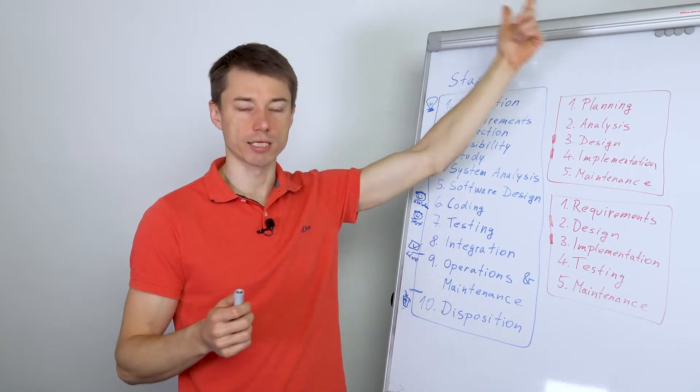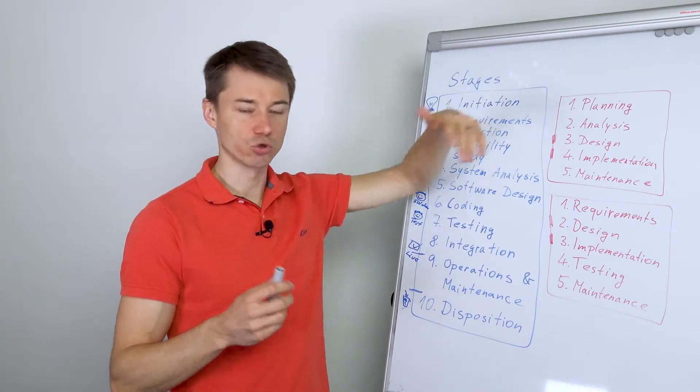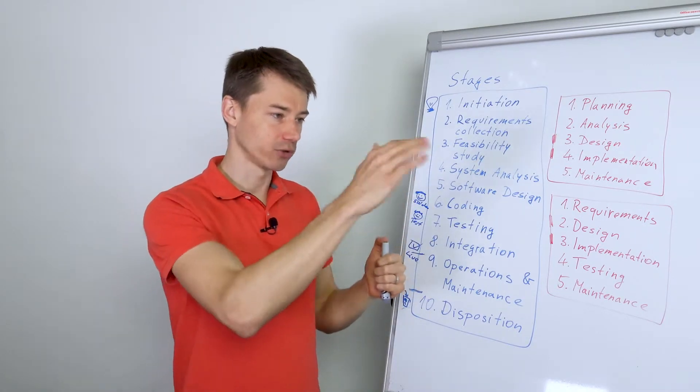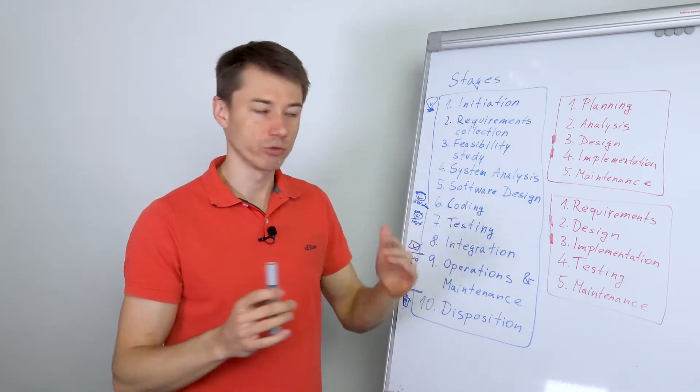First, planning. Someone has an idea, it could be one person, a business owner, he plans a few bullet points. Hey, let's do this, this, this, this and that's a plan. It's a high level plan.